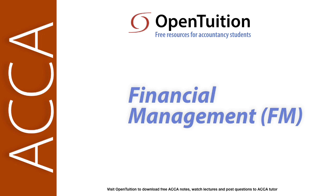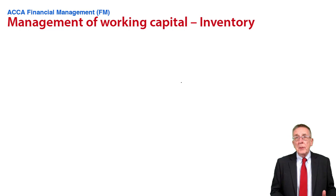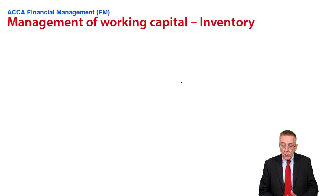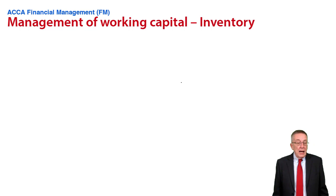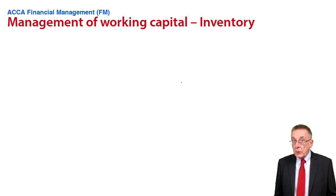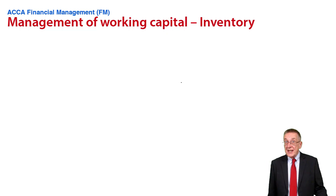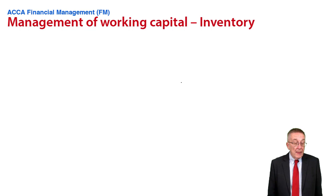We're now going to start looking through each element of working capital in turn. This one's on inventory — how best to manage inventory. There are two things we need to look at here. The first is something called the economic order quantity, which if you took paper F2 you'll already have seen. F9 examines slightly less than F2. The other one doesn't involve calculations, but you're expected to be aware of it — something called just-in-time.